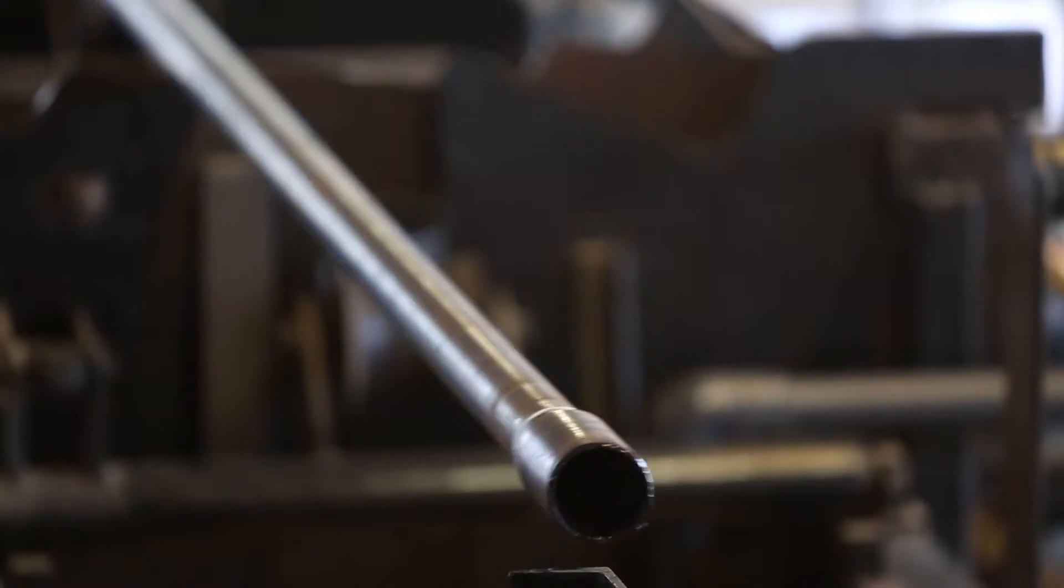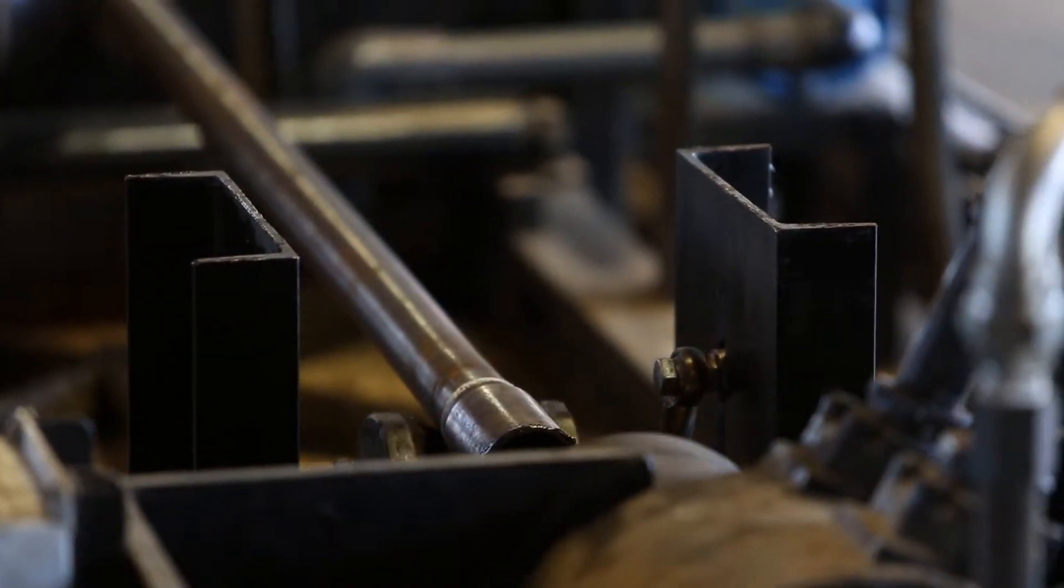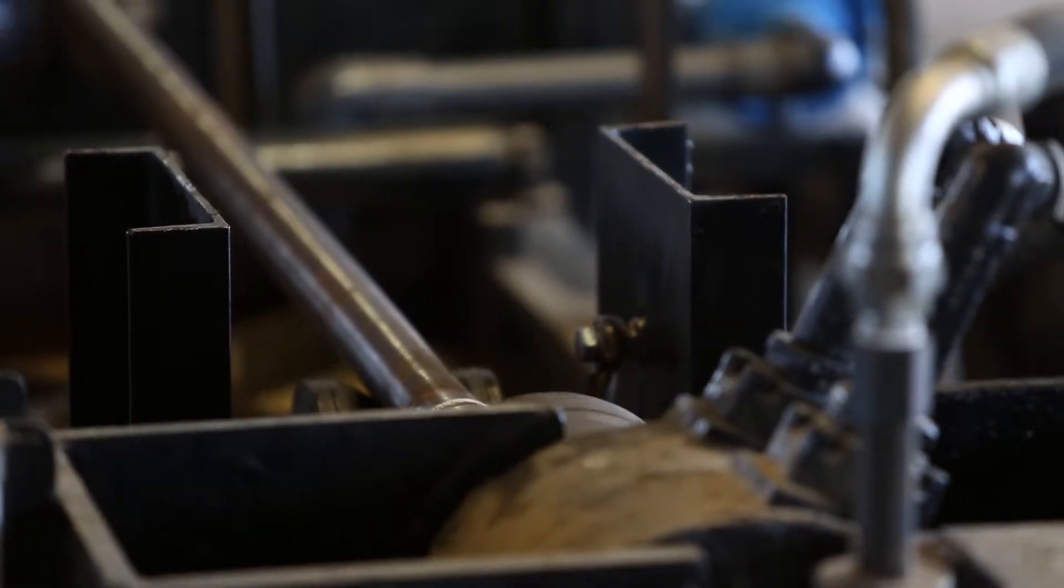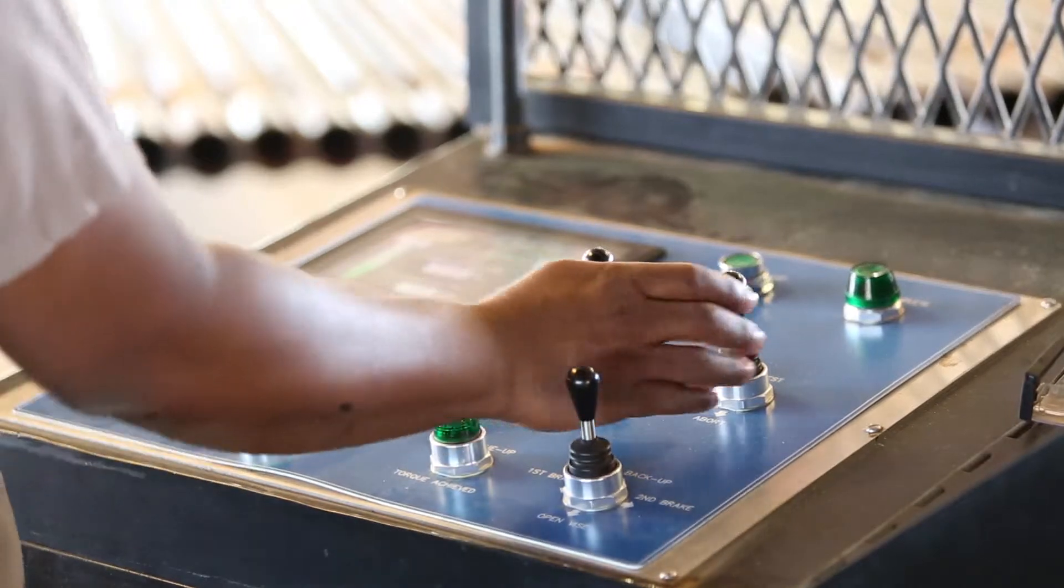As the tubing is lowered into the machine, automated test plugs screw into the box and pin. This unit performs a computerized API hydrostatic test to 80% minimum internal yield.